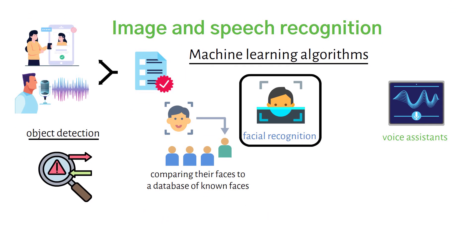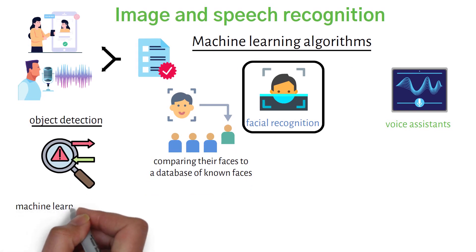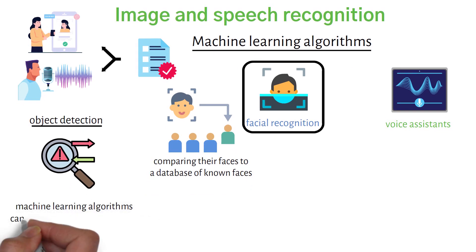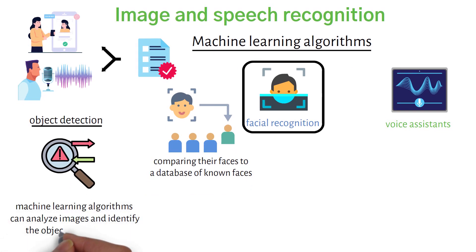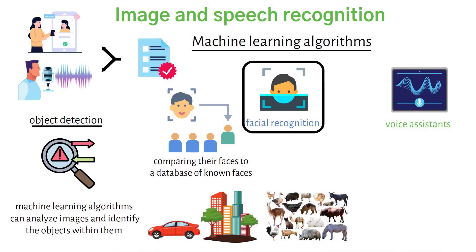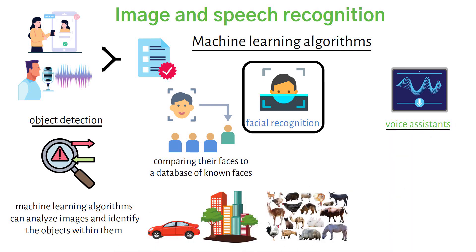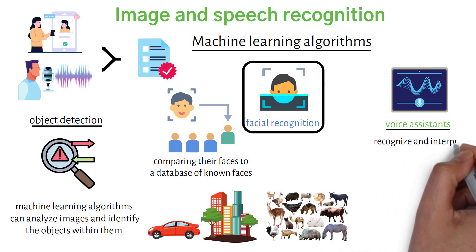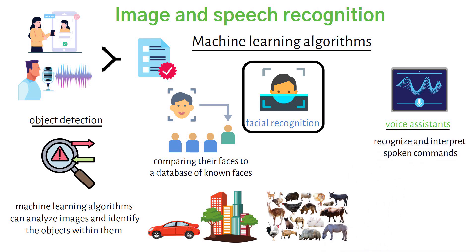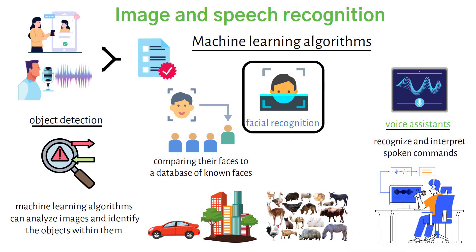For object detection, machine learning algorithms can analyze images and identify objects within them, such as cars, buildings, or animals. For voice assistance, machine learning algorithms can recognize and interpret spoken commands, allowing users to interact with their devices without typing.